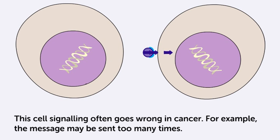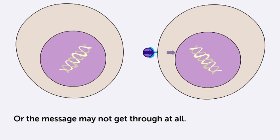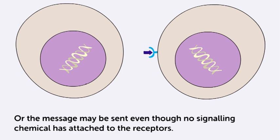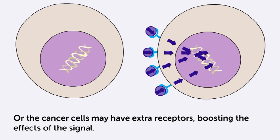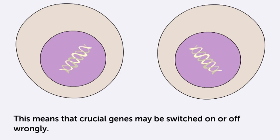This cell signalling often goes wrong in cancer. For example, the message may be sent too many times. Or the message may not get through at all. Or the message may be sent even though no signalling chemical is attached to the receptors. Or the cancer cells may have extra receptors, boosting the effect of the signal. This means that crucial genes may be switched on or off wrongly.